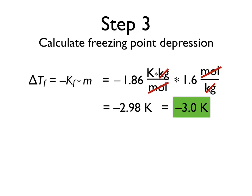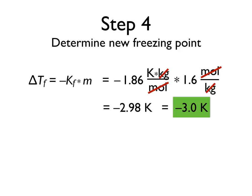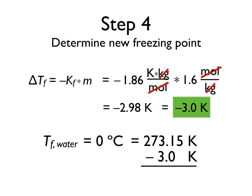In order to see what our final freezing point is, we look at what our initial freezing point was and subtract the depression from that. The freezing point of water is 0 degrees Celsius, which in terms of Kelvin is 273.15 Kelvin. Our freezing point depression was minus 3.0 Kelvin, so we subtract that to give us a final freezing point of 270.15 Kelvin, or in terms of Celsius, minus 3 degrees Celsius.